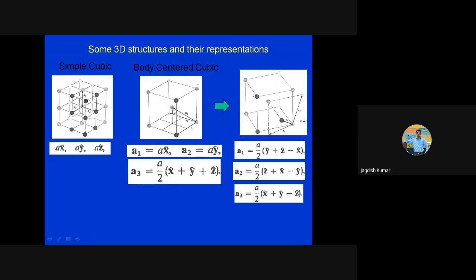The primitive cell for BCC won't look like a cube — you join these three vectors a₁, a₂, a₃ and make a parallelepiped out of them. Because if you have any three vectors, you can always make a parallelepiped — that will be the shape of the primitive cell.